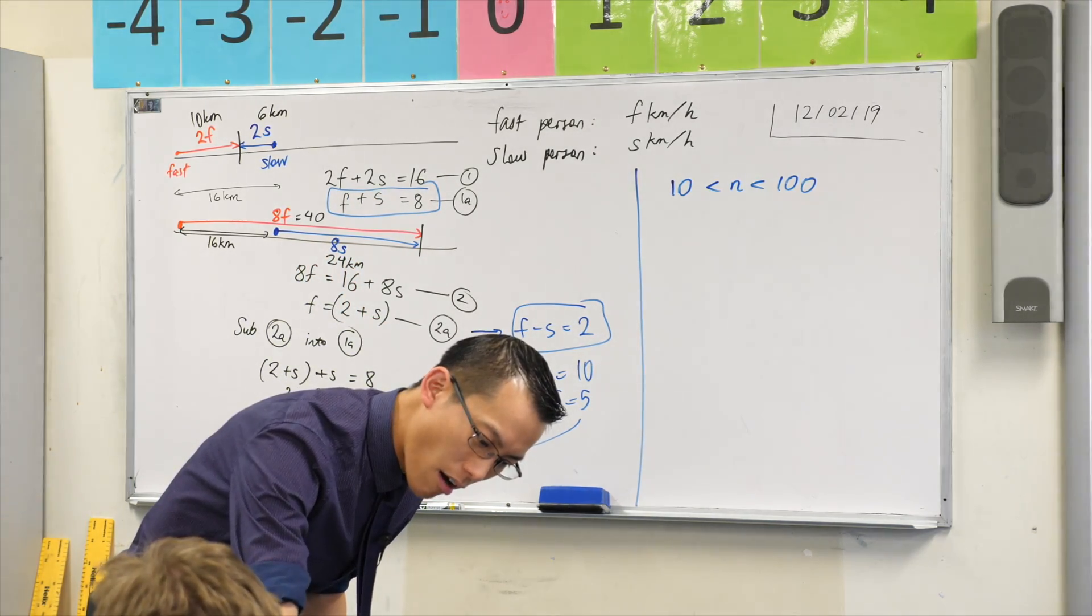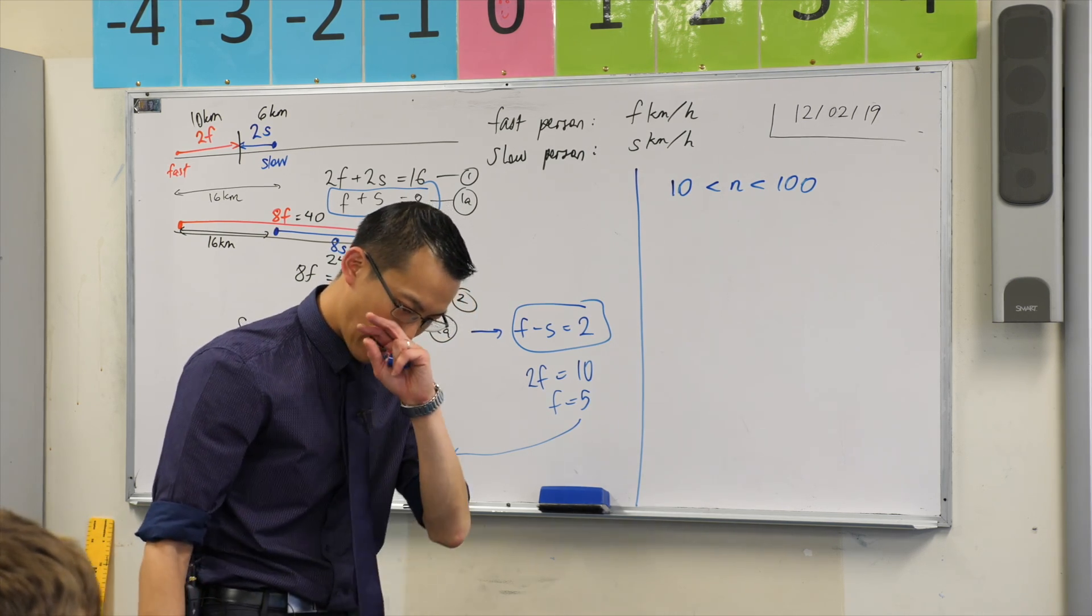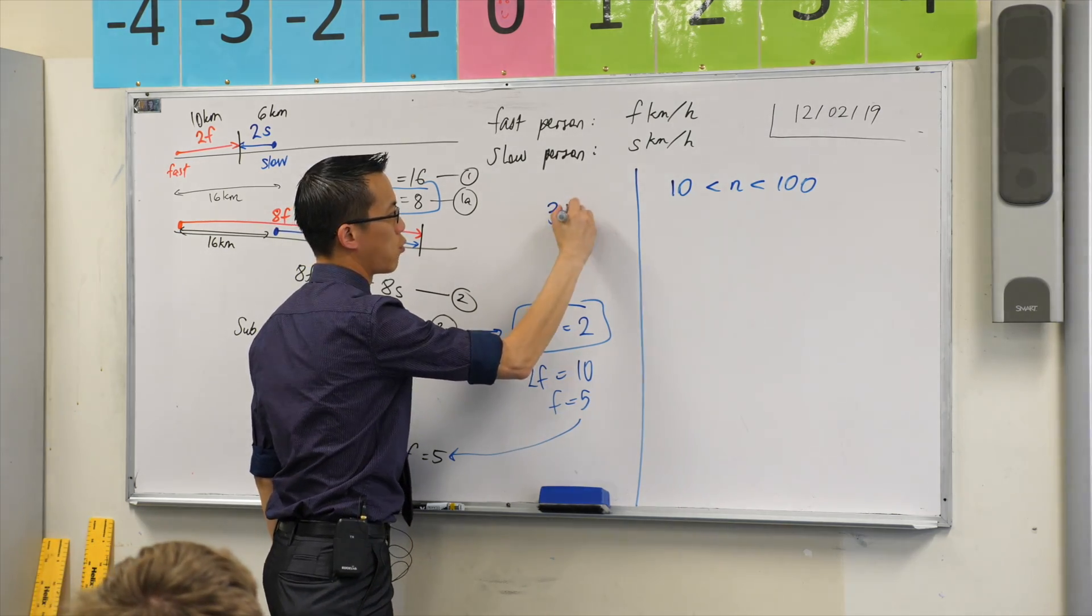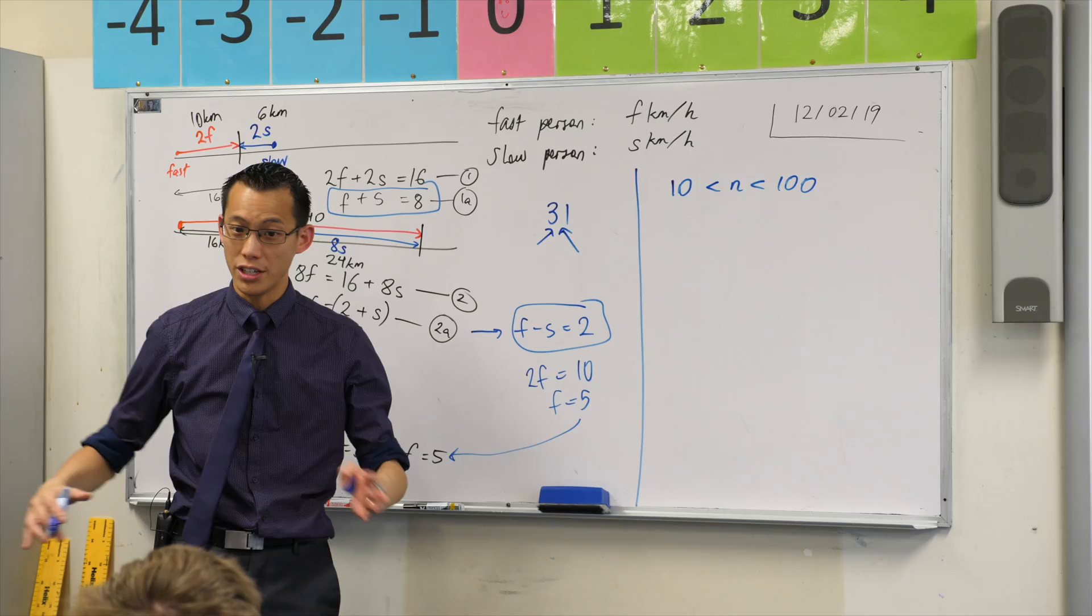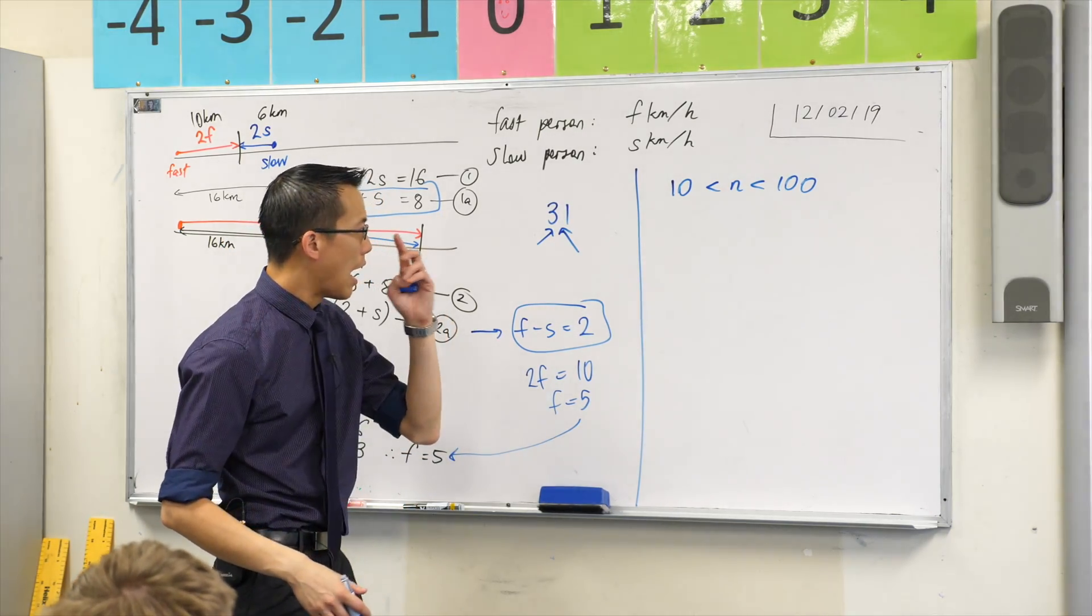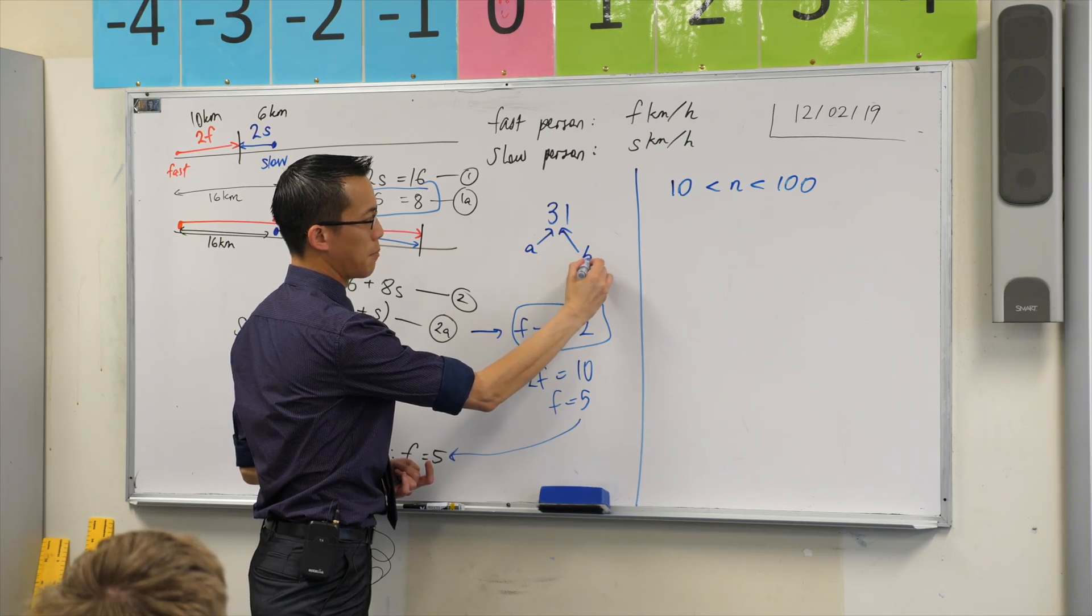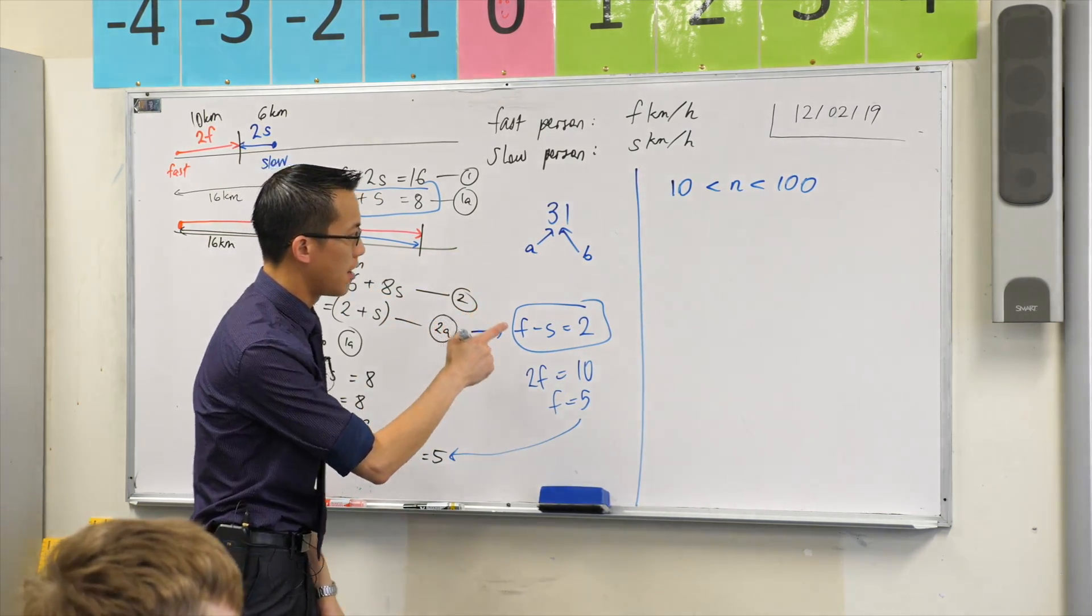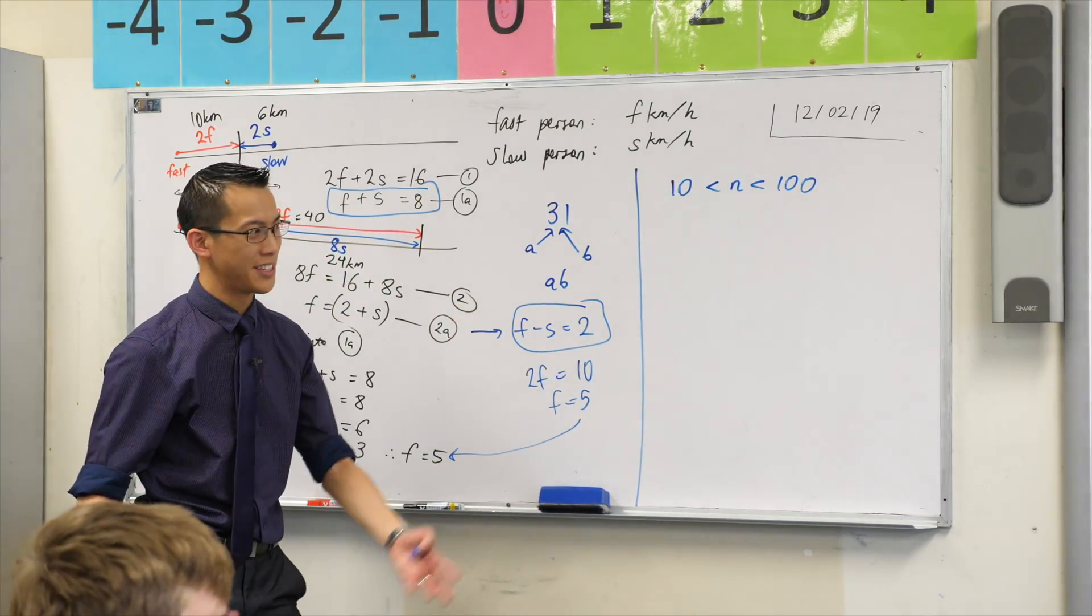Its value is 8 times the sum of its digits. Okay, so if we had a number, like say 31, I can give these two digits parameters. But you've got to be careful because if I call this one A and this one B, so A is 3 and B is 1, this number, you can't really write it as AB, can you?